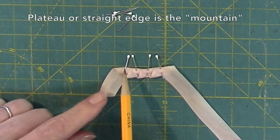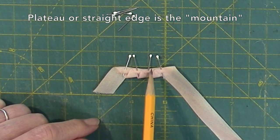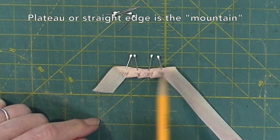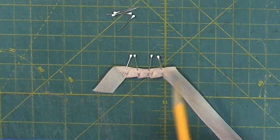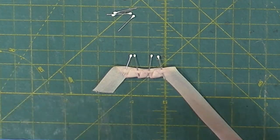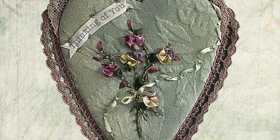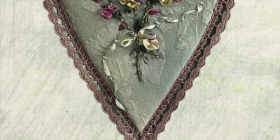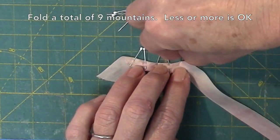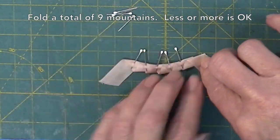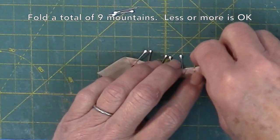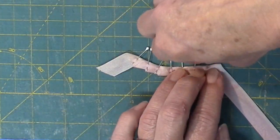Let's count the mountains: one, two, three, four. The plateau or the straight edge is what I am counting as a mountain. Continue folding and pinning the mountains for a total of nine mountains, or less or more.